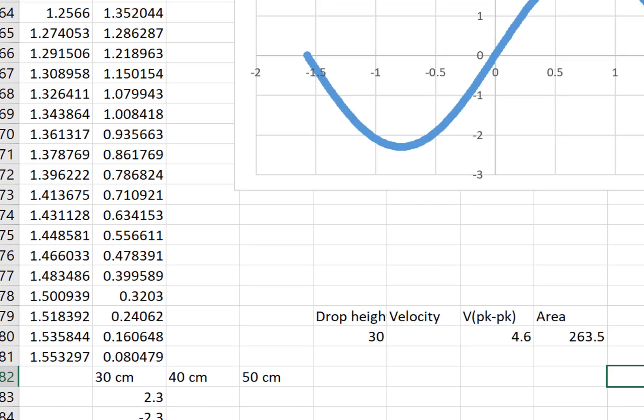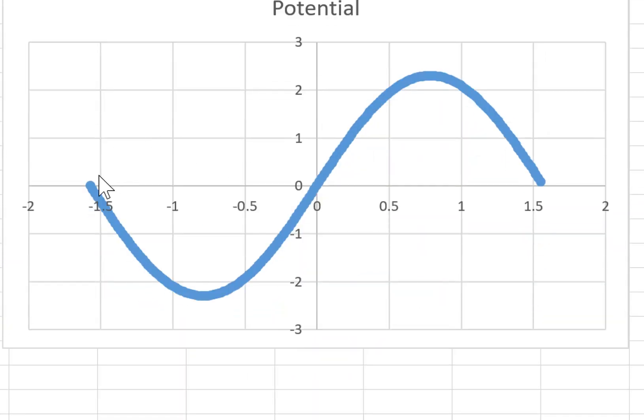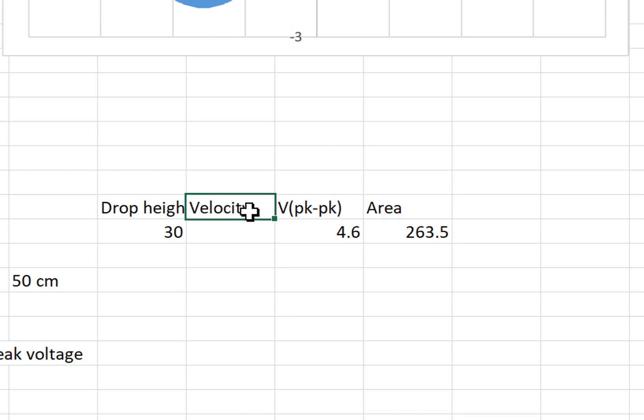In the end you should have at least three graphs. One of at least one representative run that shows what the potential looks like as a function of time. A second one that shows the peak to peak voltage versus velocity. And a third one that shows the area versus velocity.